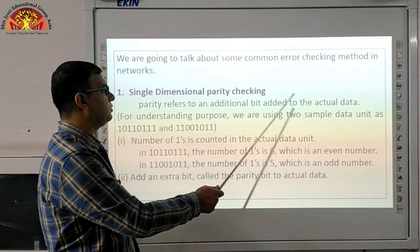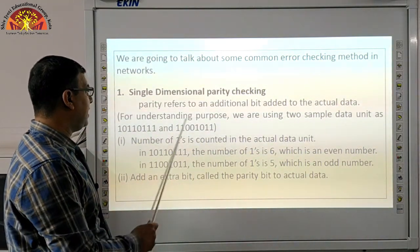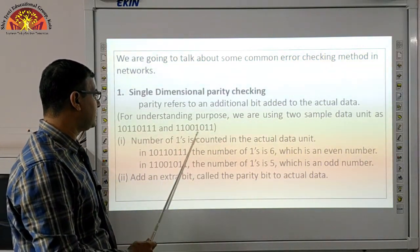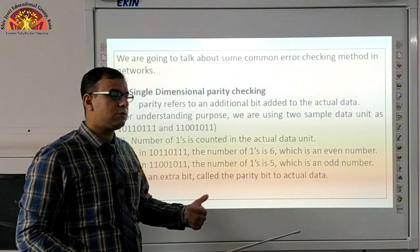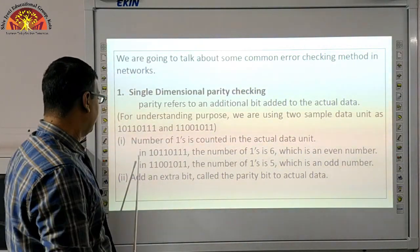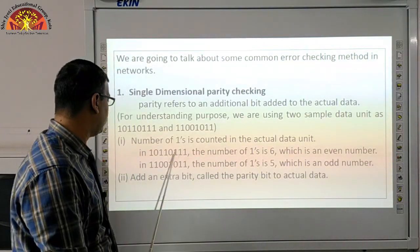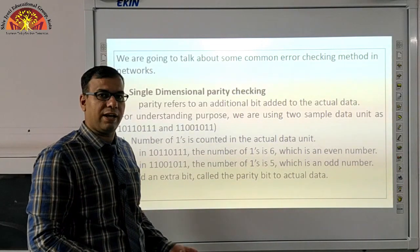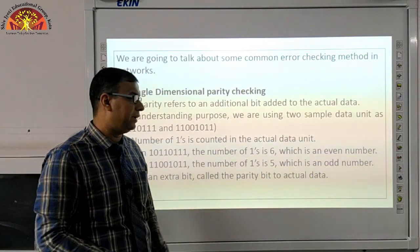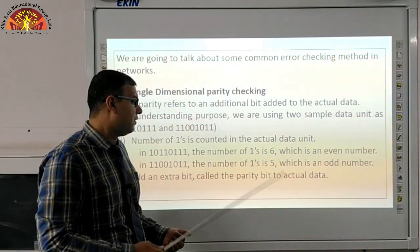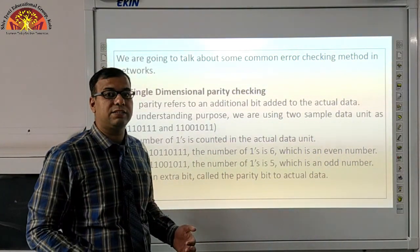Step one: count the number of ones in the actual data unit. There are two digits — zero and one. So we count the number of ones. In the first data, the count of ones is six, which is an even number. In the second data, the number of ones is five, which is an odd number. So first data: number of ones is six — even. Second data: number of ones is five — odd.